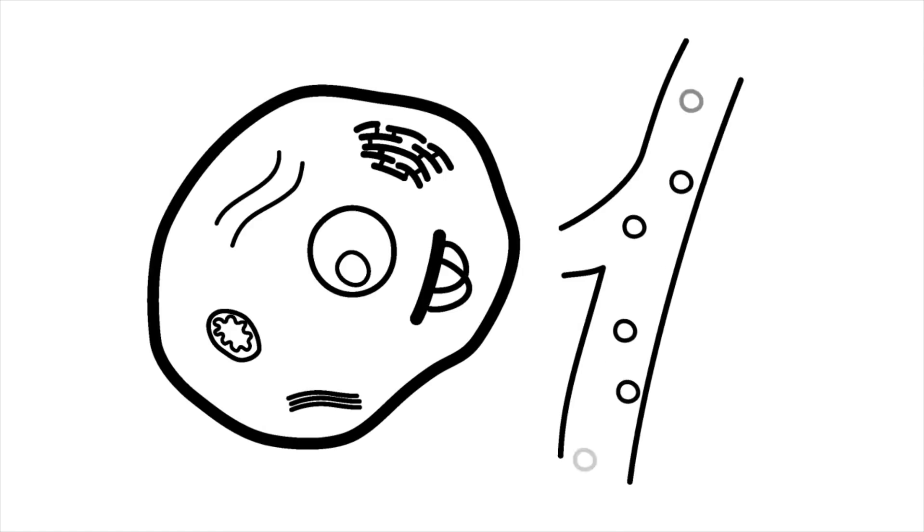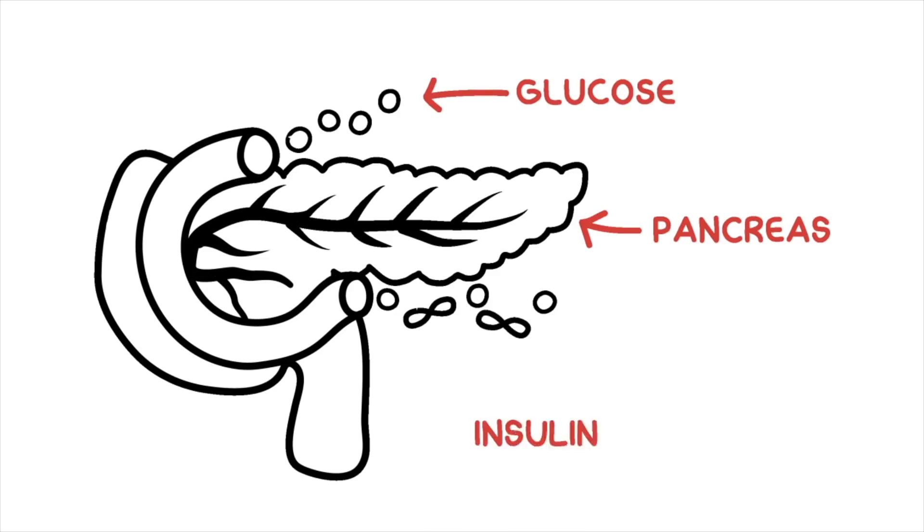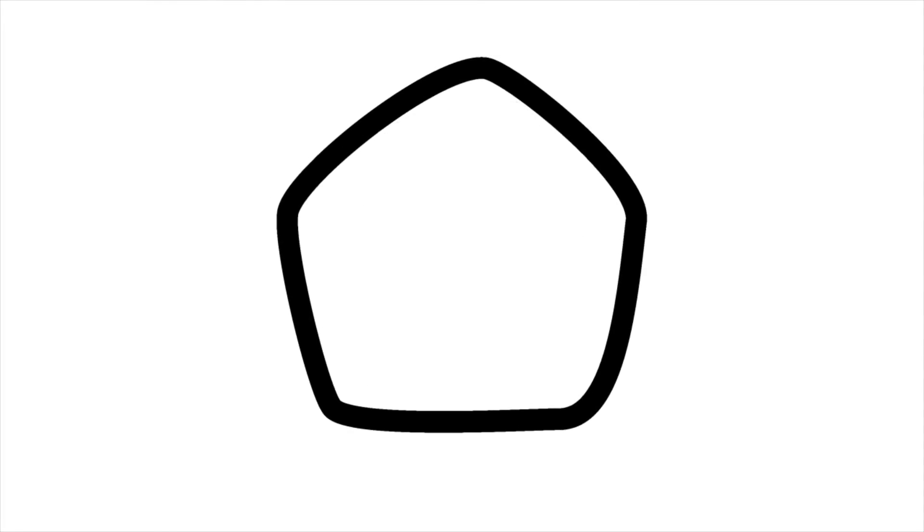Cells do not have any type of receptor, sort of a doorbell to tell the cell that the glucose is waiting to come in. This is where insulin comes into play. When glucose is absorbed into the blood after a meal, it can go into the pancreas that releases insulin in response. So now what happens is that the insulin accompanies glucose molecules, and when they get to cells, the insulin hormone alerts the cell to the presence of the glucose. In effect, the insulin rings a bell on the cell to say, glucose delivery.